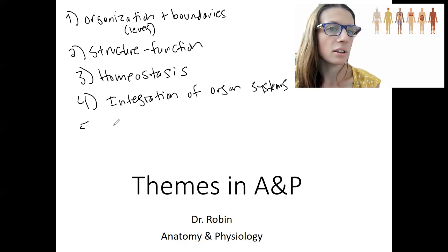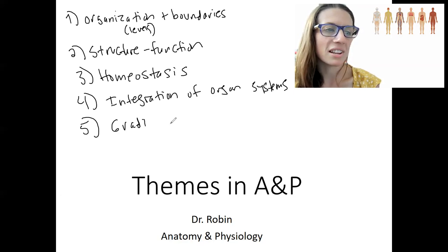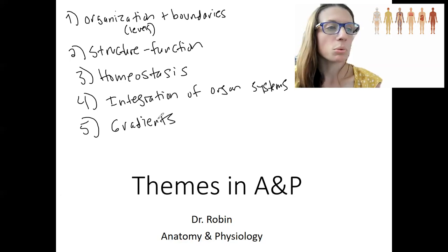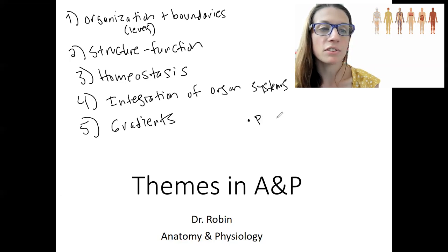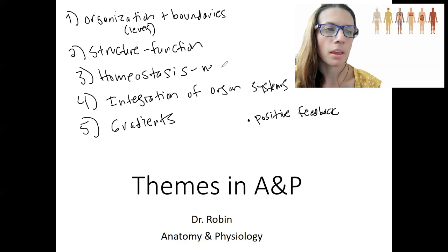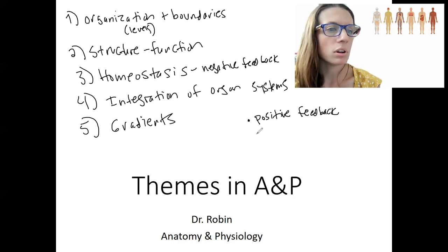And lastly, gradients — a difference in something — which is going to be big. So we'll talk about these five things, as well as positive feedback. Negative feedback is something we'll talk about along with homeostasis — it is the main mechanism for maintaining homeostasis.